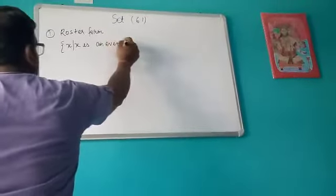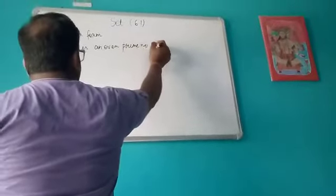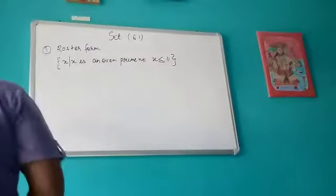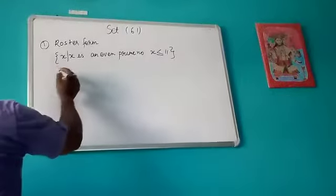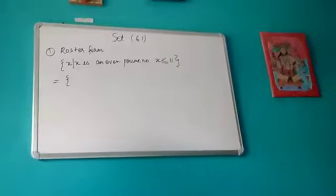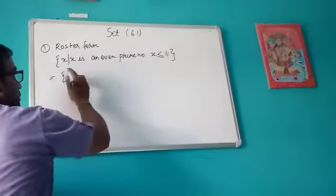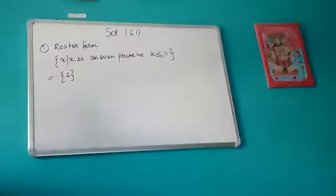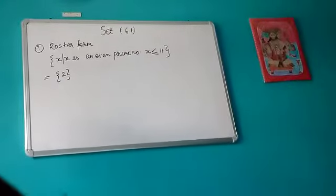Suppose the condition is: x is an even and prime number, and x is less than or equal to 11. We have to write the elements. A prime number which is also even — there is only one such number, which is 2. So the set contains only the element 2.